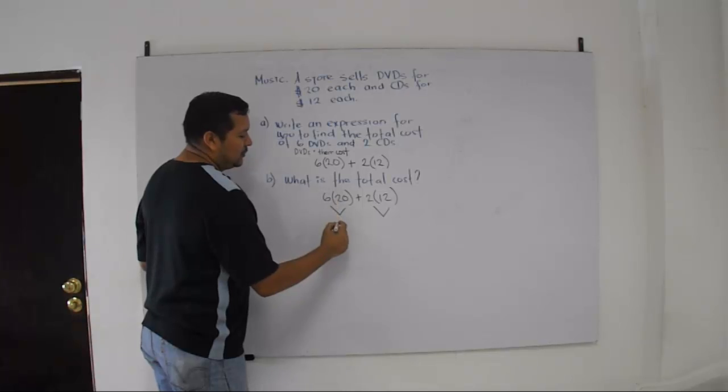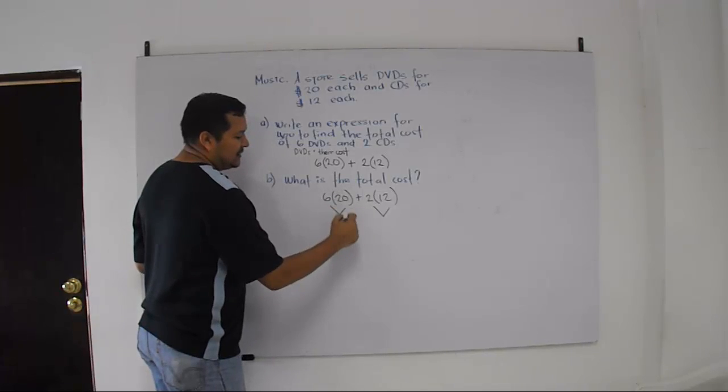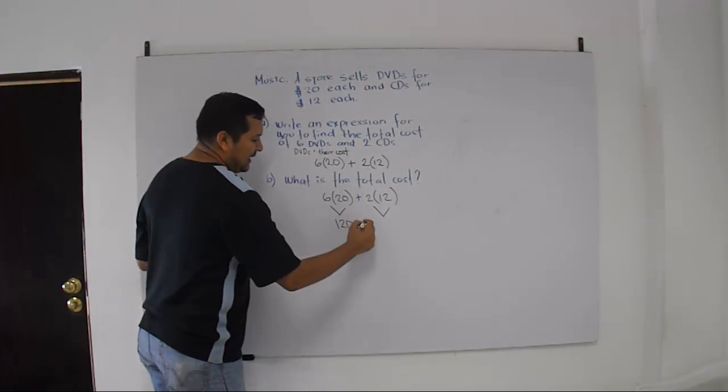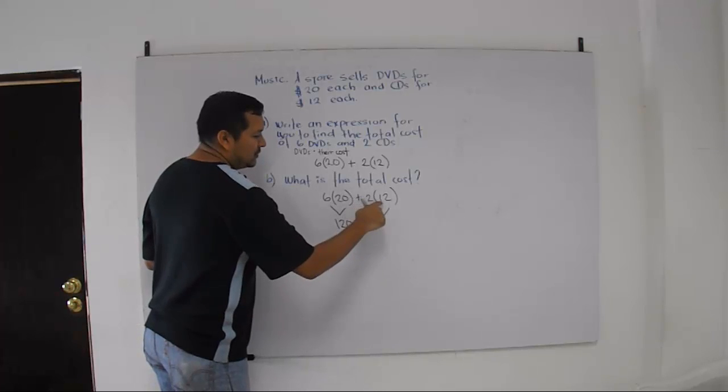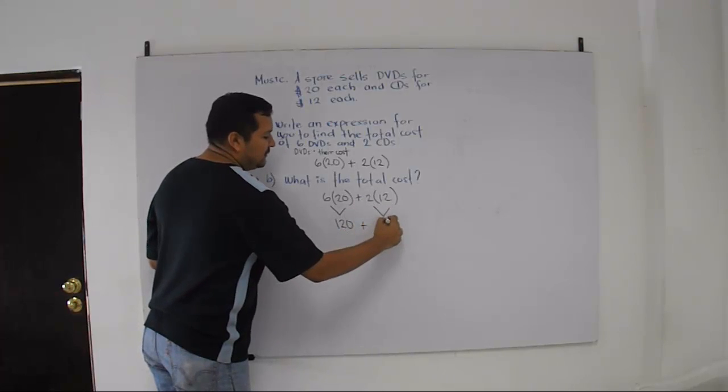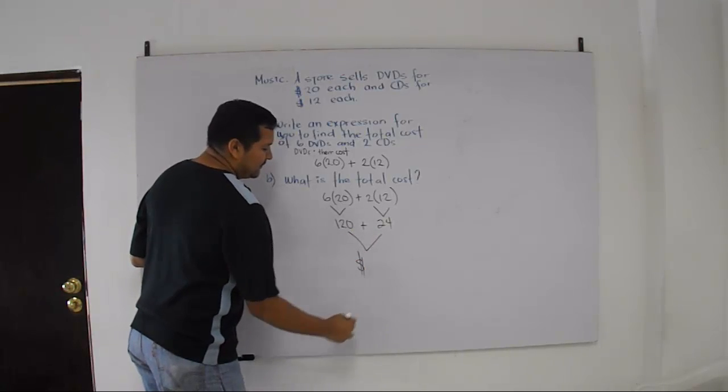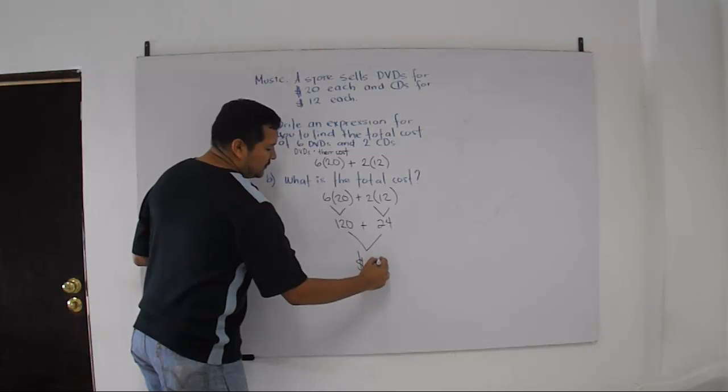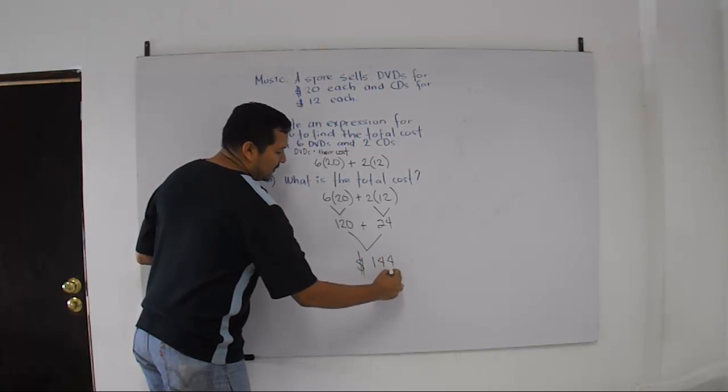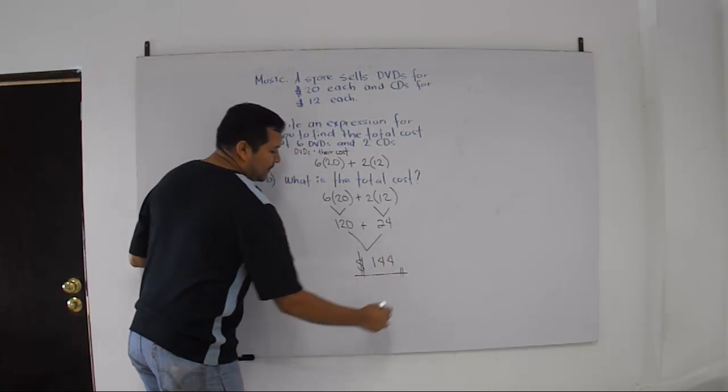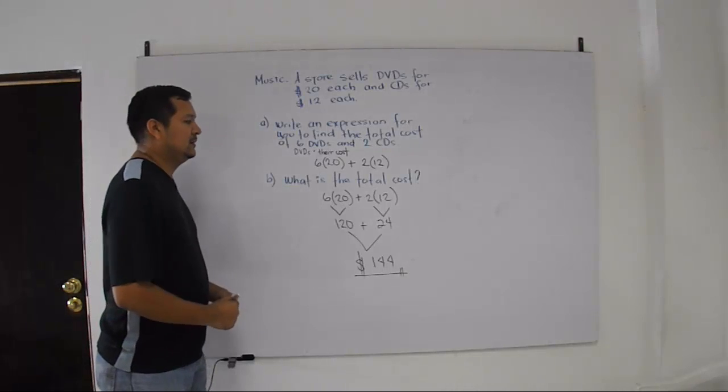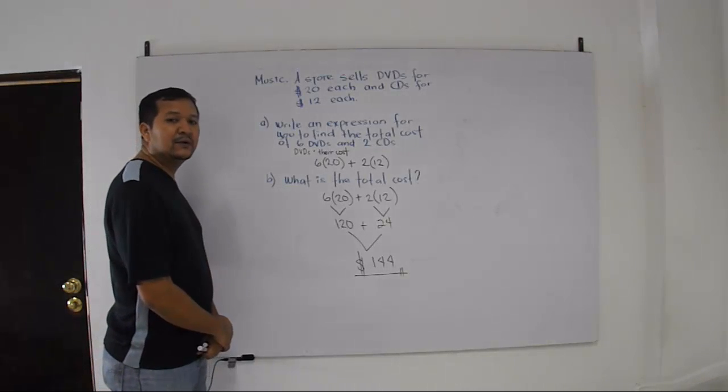6 times 20 is 120. And I just add the 0. Plus 2 times 12 is 24. And we add these two and the cost will be $144 when you add the two. The total cost is $144.